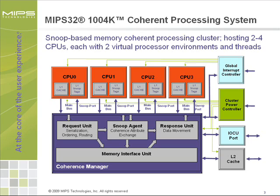Last but not least, the 104K cluster provides a power controller to support power management for each individual CPU and its supporting structures. As a platform peripheral, this power controller is fully programmable and can respond to software and hardware events. Core purpose of the power controller is to provide power supply gating, clock management, and reset sequencing for each power domain. The controller will hardware-enforce system integrity for the duration of power sequencing.